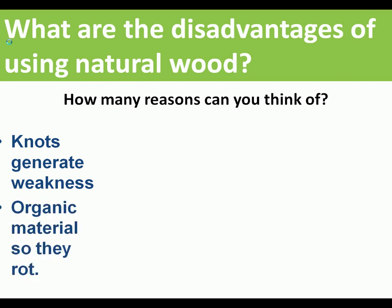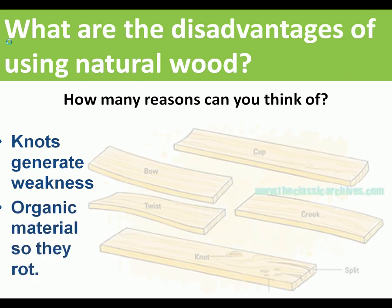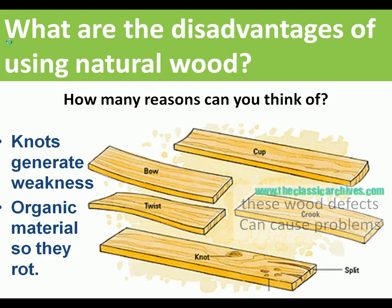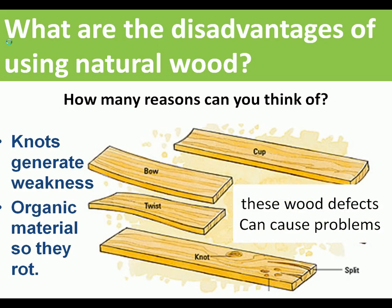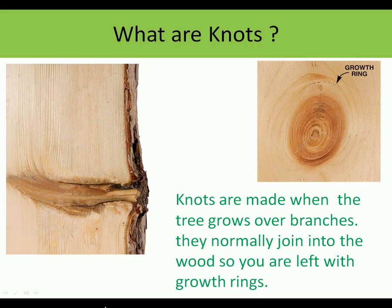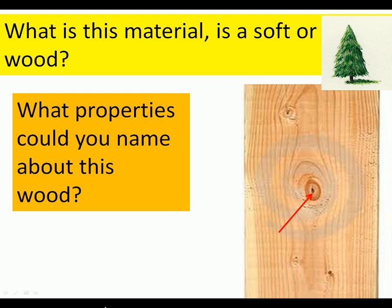The disadvantages of using natural wood are that it can have knots, it will rot if not treated properly, and there are many wood defects that cause problems — knots, splits, bow. These are all things that make the wood unsuitable or difficult to turn into furniture. Knots are formed when the tree grows over branches, leaving little growth rings — a natural defect in wood.